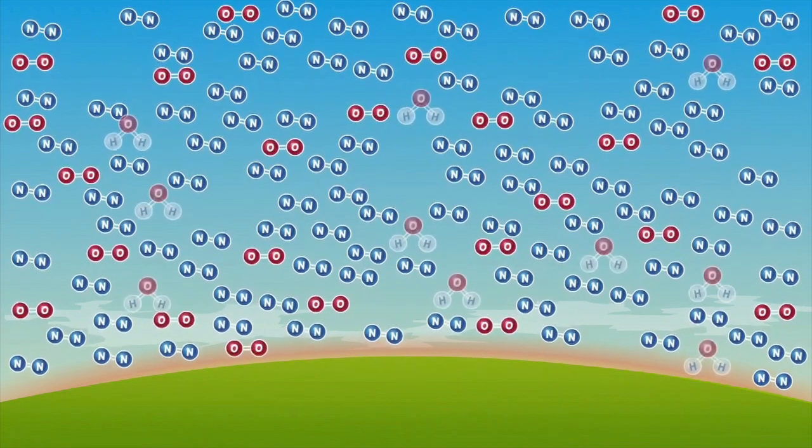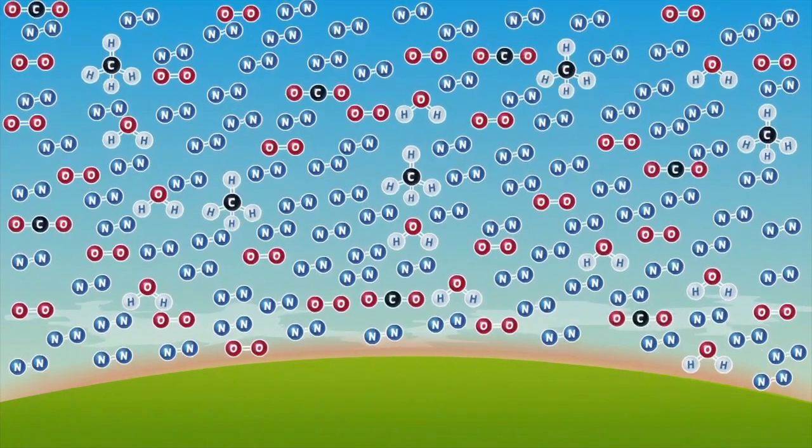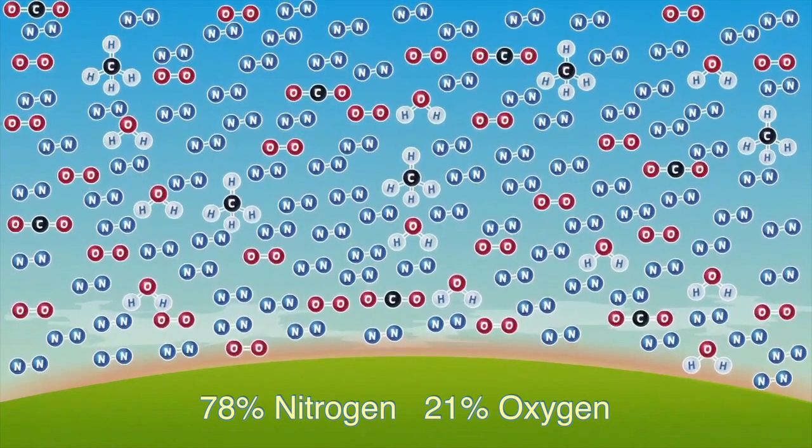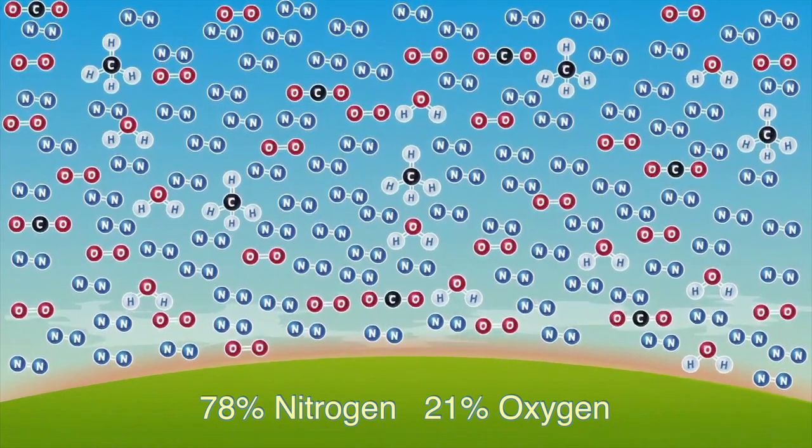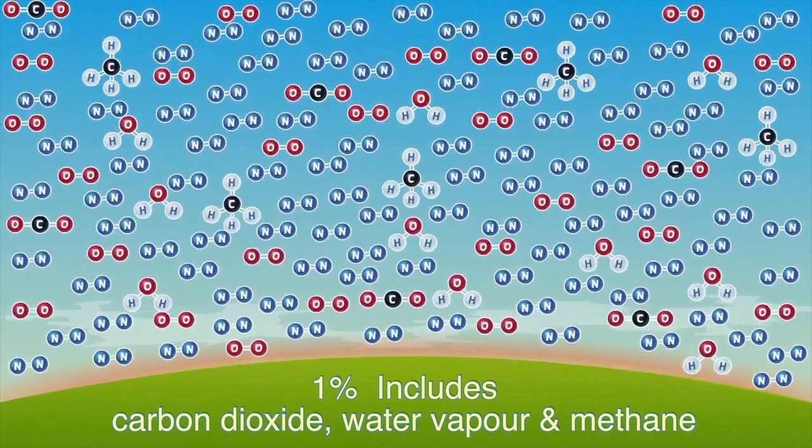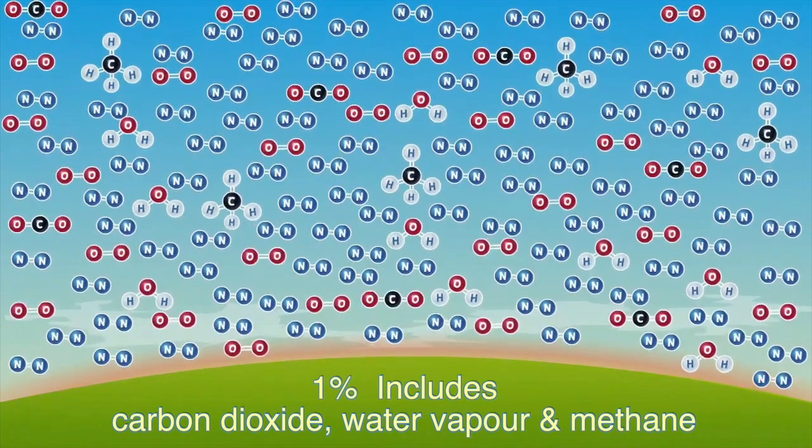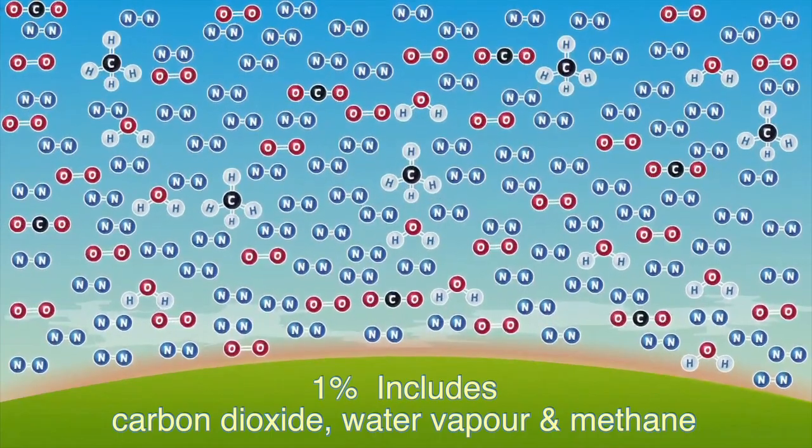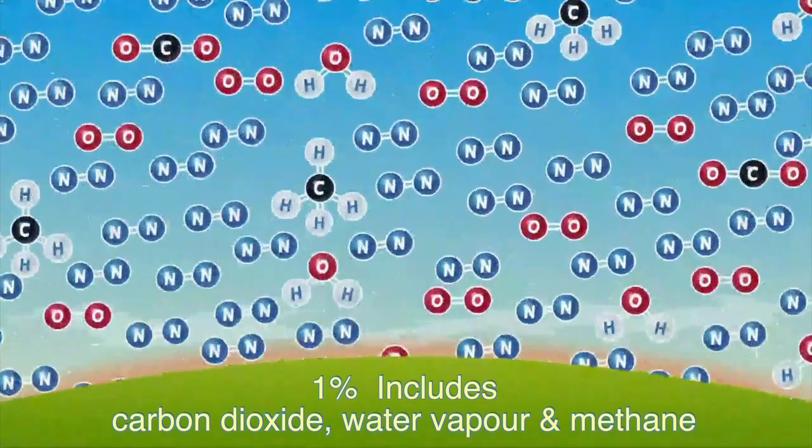The atmosphere is composed of a mixture of gases: 78% nitrogen, 21% oxygen. All other gases are in the remaining 1%. It is this 1% that is the most important in temperature regulation and includes carbon dioxide, water vapour and methane.